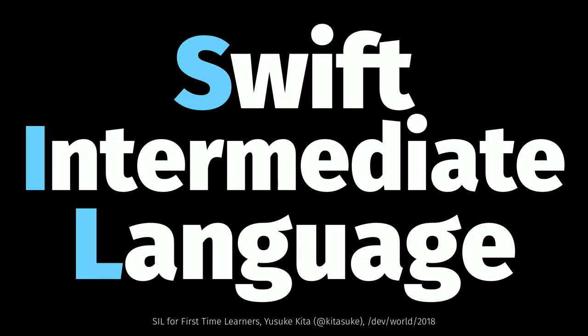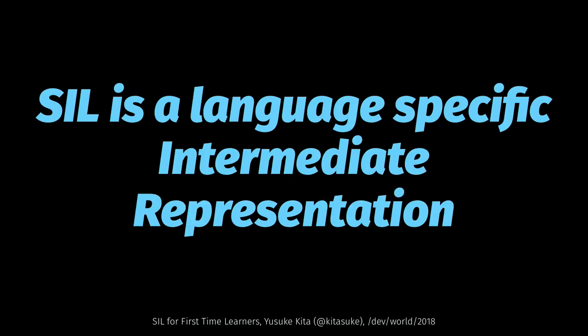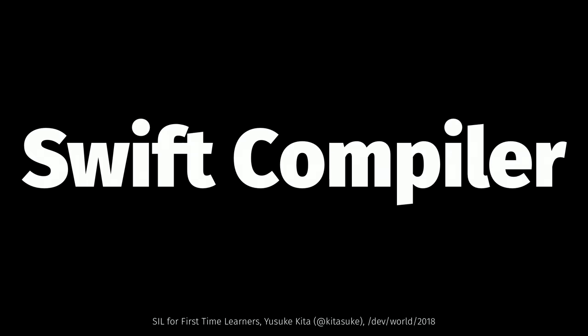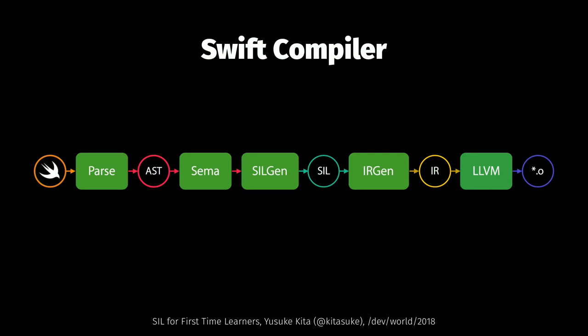So this is about SIL — Swift Intermediate Language, or more precisely, Swift Intermediate Representation. SIL is a language-specific intermediate language only for Swift; we don't have this in Objective-C. Swift programming language runs on the Swift compiler, obviously. The pipeline takes a Swift source file as a string, constructs an AST, generates SIL, lowers to LLVM IR, and then emits binary code. What the Swift compiler does is take a string file and emit binary code — that's it.